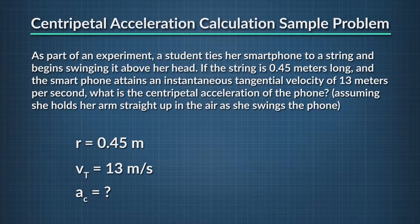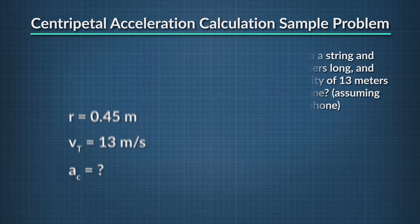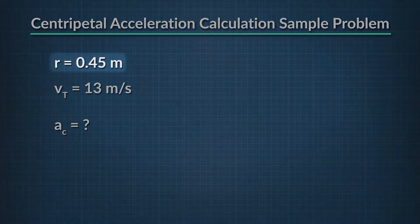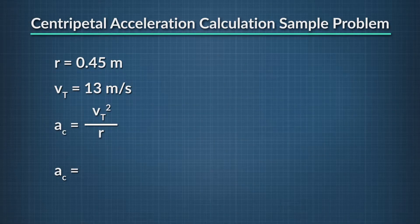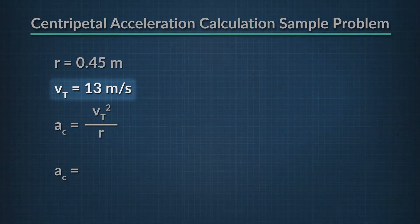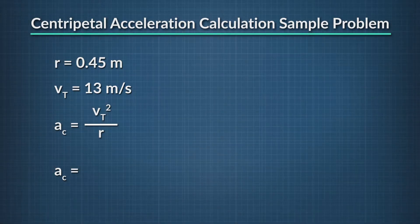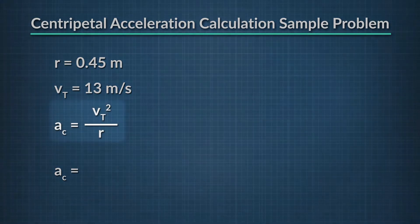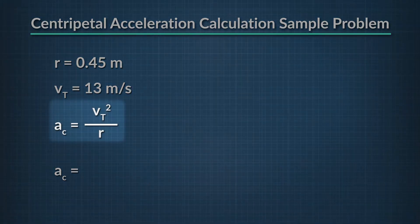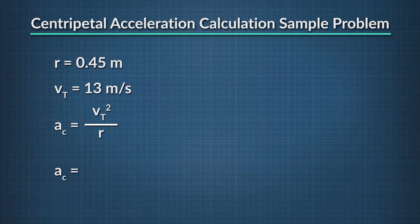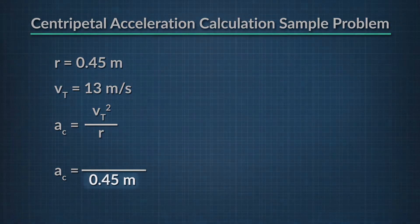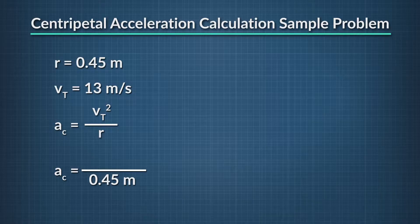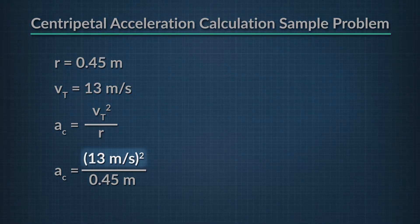Let's write down our variables. The radius of the circle is 0.45 meters, and the tangential velocity is 13 meters per second. Our unknown is centripetal acceleration. Since we know the distance of the string, we can plug that into the equation for radius. The tangential velocity is also given, so we can plug that into the equation as well.